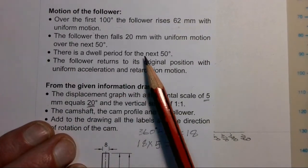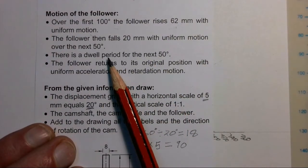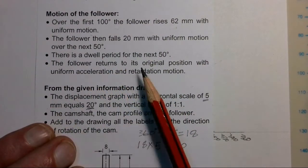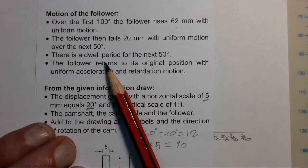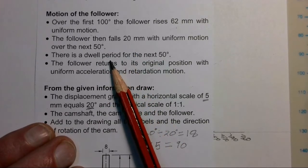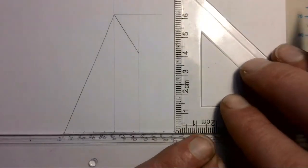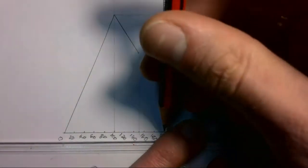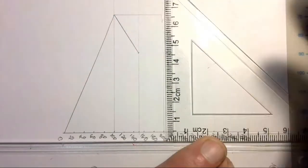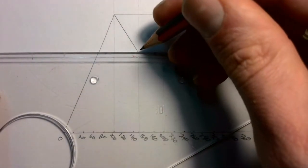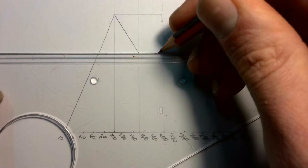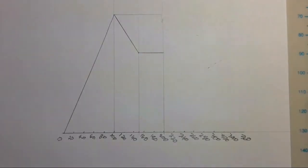There's a dwell period for the next 50 degrees. A dwell period is just a rest period where the follower doesn't go up or down — that's a straight horizontal line. From 150, 50 degrees takes us to 200, so we go to 200 on the displacement diagram and draw a construction line up. Since it's a dwell, it's just a horizontal line going across.